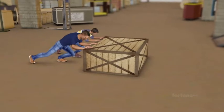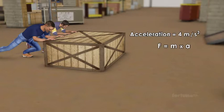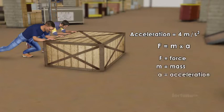Let's calculate how much force is required to accelerate our 40-pound box at 4 meters per second squared. We can use the formula F equals M multiplied by A, where F is the force, M is the mass, and A is the acceleration. This is the formula for Newton's second law.